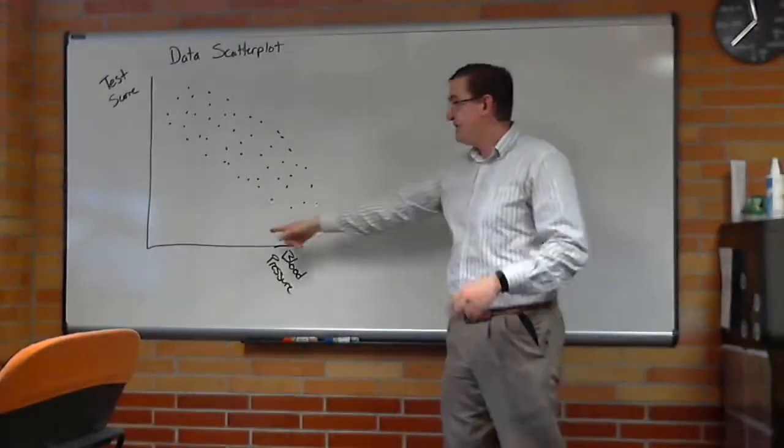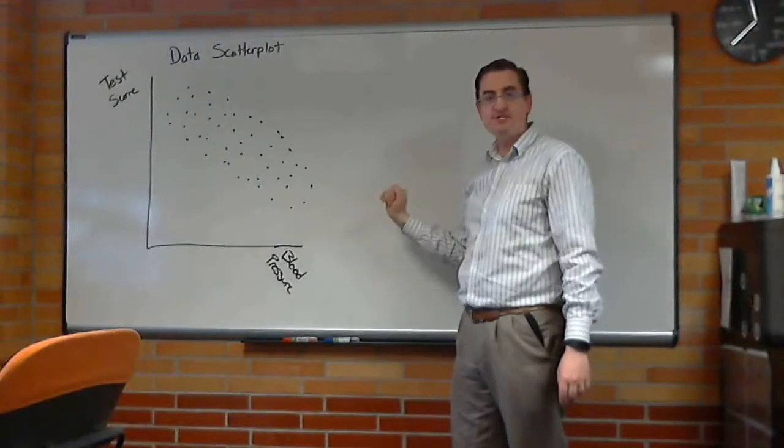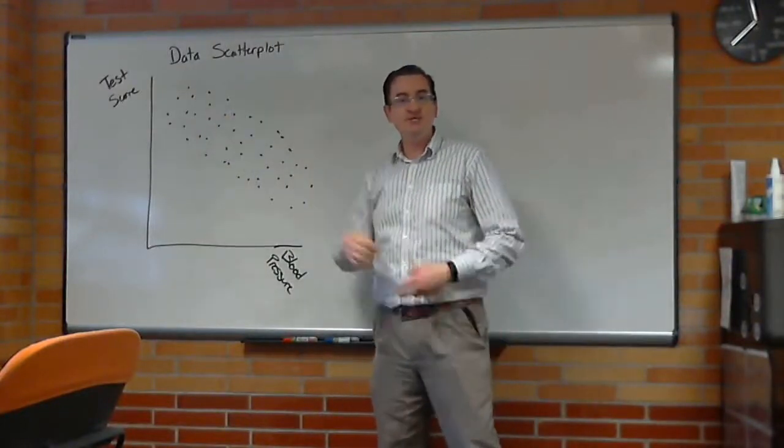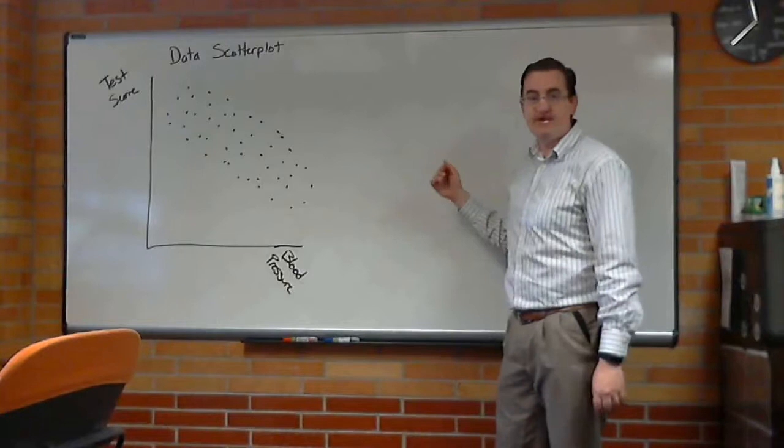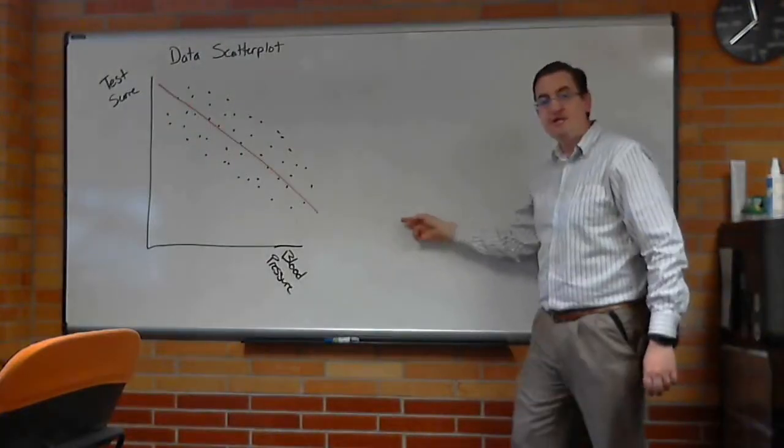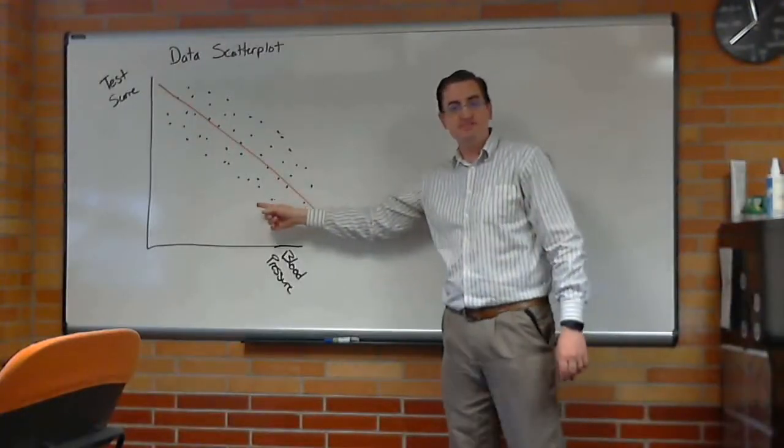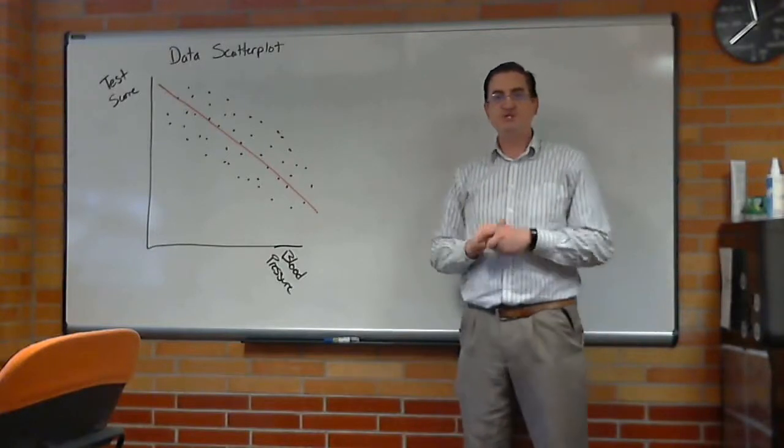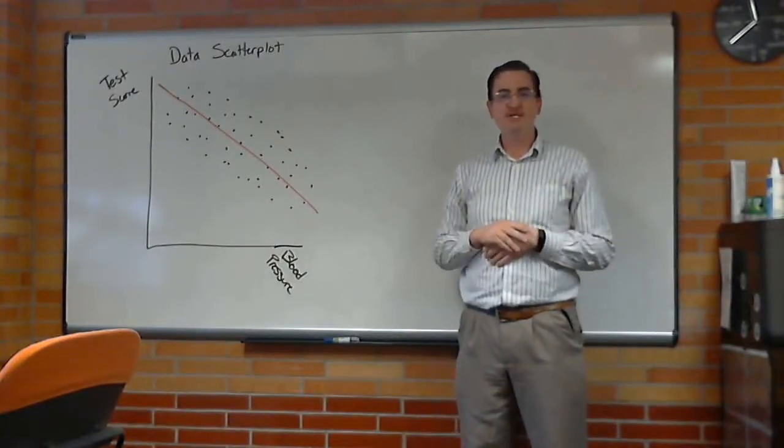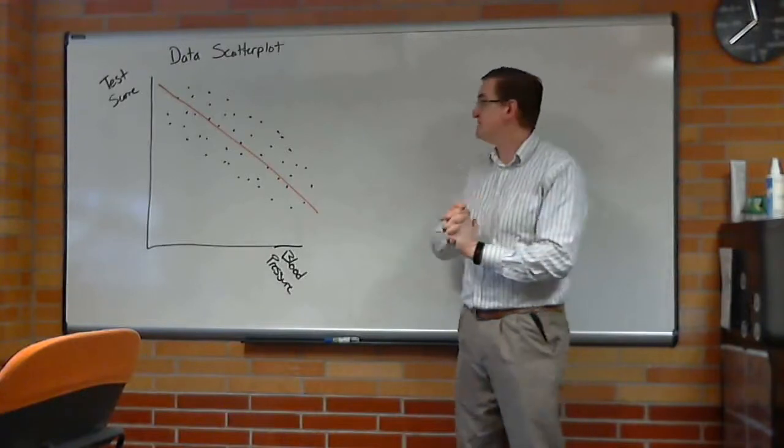Here's an example I've always wanted to try. If I measure your blood pressure right before a test, would it relate to your test score? I'm making some sort of a guess the regression line would be negative here. In other words, as your blood pressure goes up, that's because your test score is dropping. Something about being worried or scared about the exam. I would love to see this study actually done.